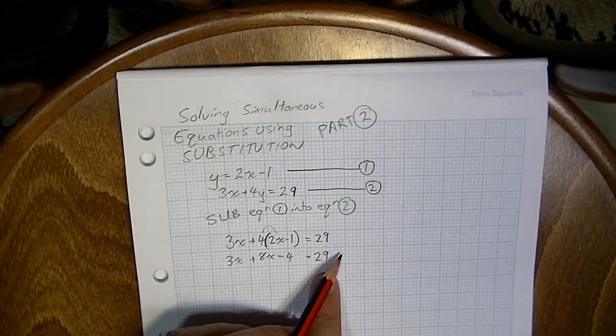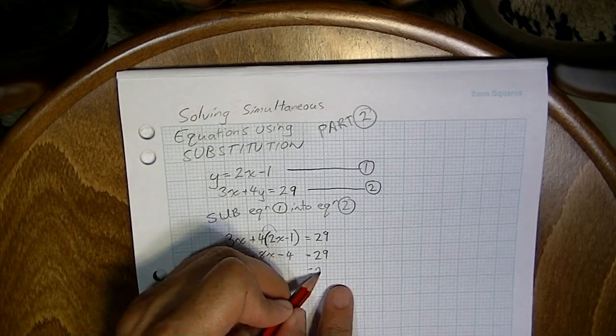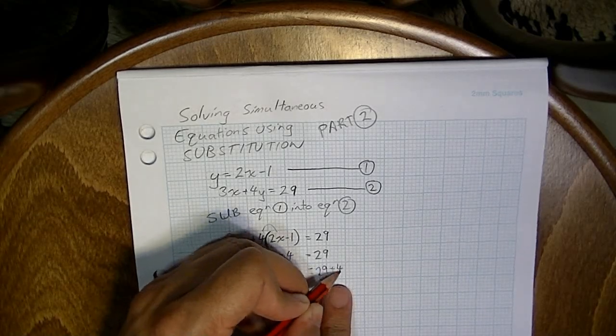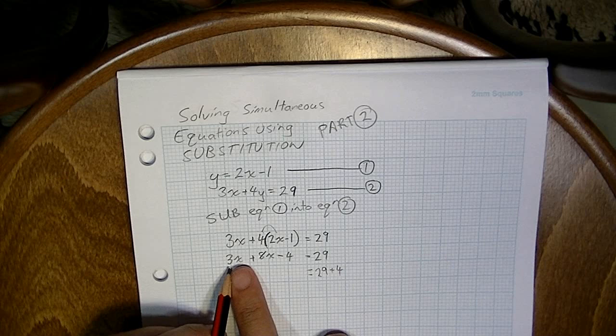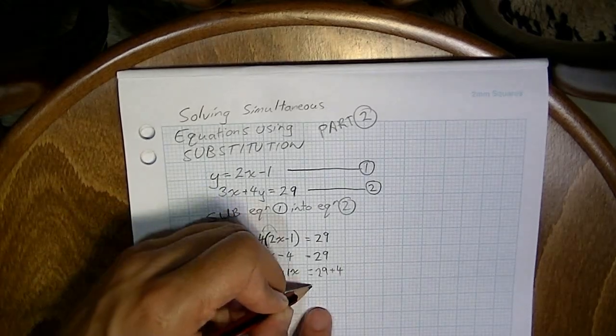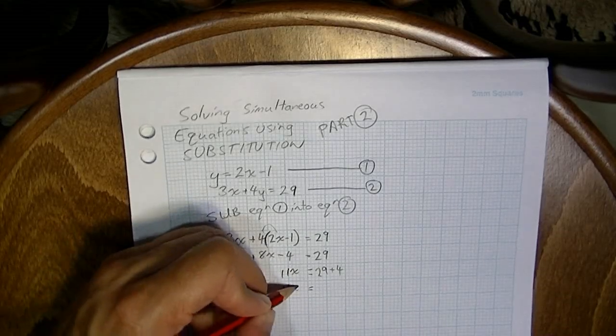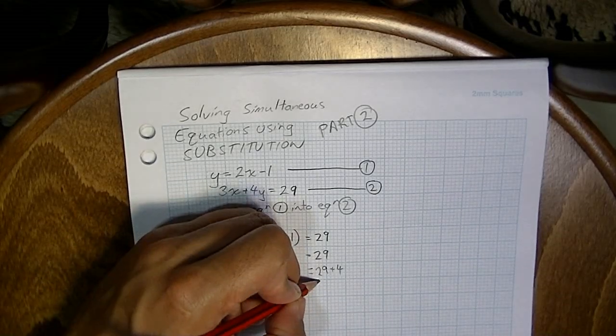I'm going to move that negative 4 over to this side. It's going to become a positive 4. So 29 plus 4. While I'm doing that, I'm going to group 3x and 8x. That's going to make 11x. Okay, so that's going to give me 11x, which is equal to 33.